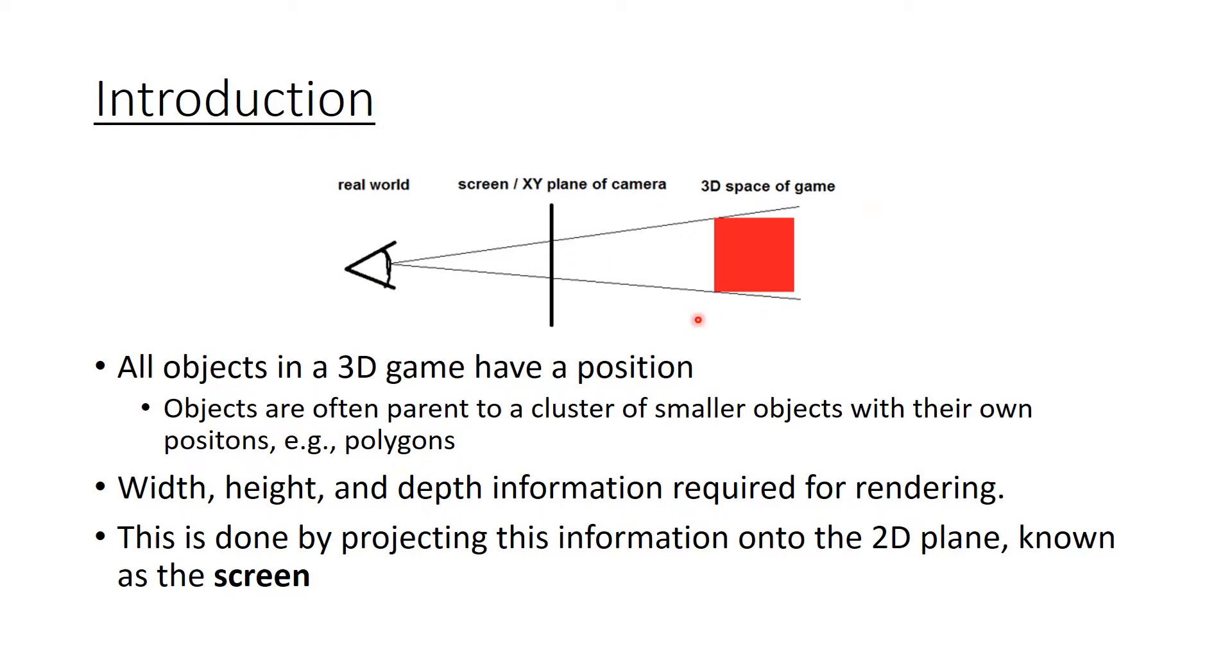LO1. All objects in a 3D game will have a position and may actually be a collection of many different positions such as in a mesh. They are rendered by being projected onto the screen. I'll now go through the maths involved in that process.